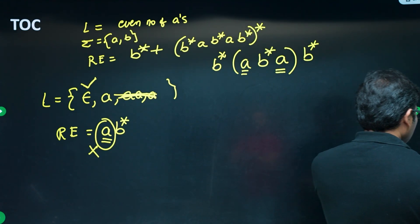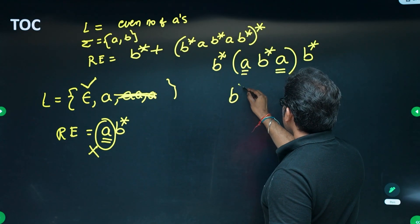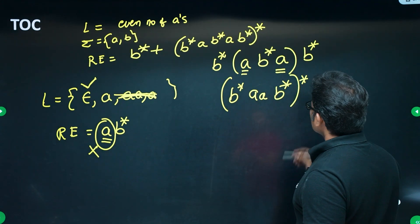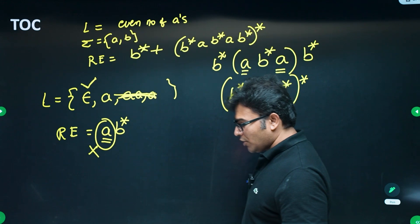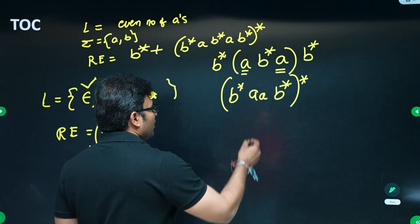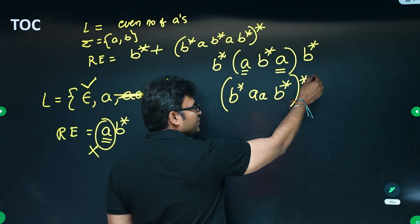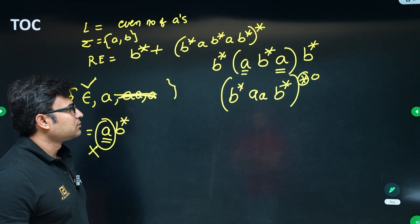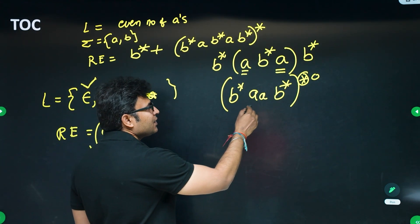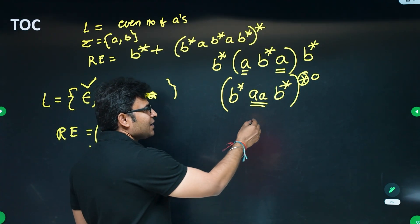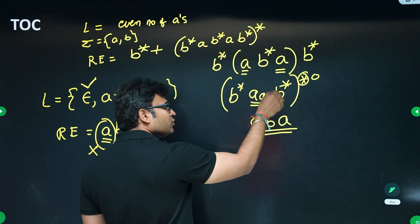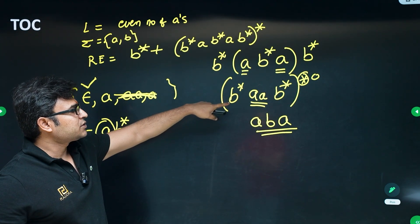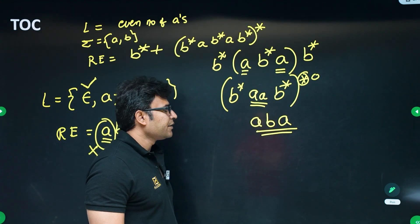Another student gave: (b*aab*)* . Intuitively, epsilon is generated when you apply the star zero times. But notice that a and a are always together with nothing between them — you can never generate 'aba'. Since 'aba' contains an even number of a's and is in the language but cannot be generated by this expression, you can rule it out.